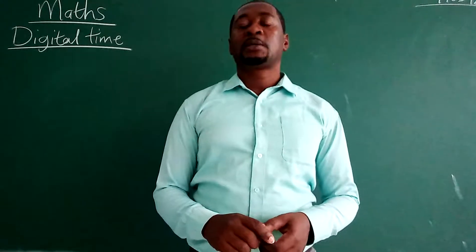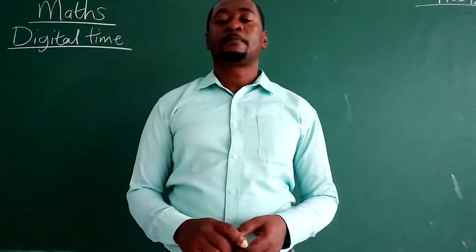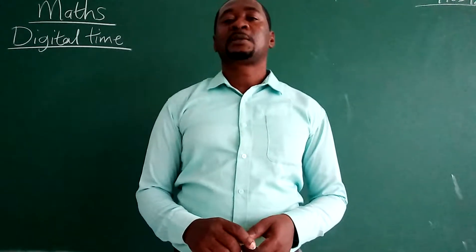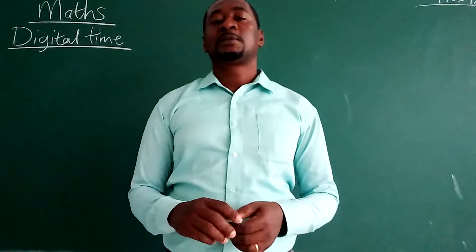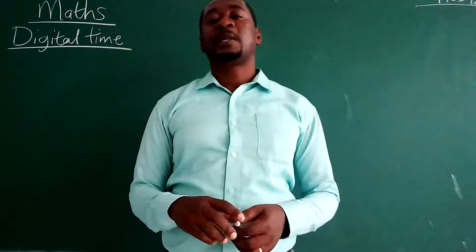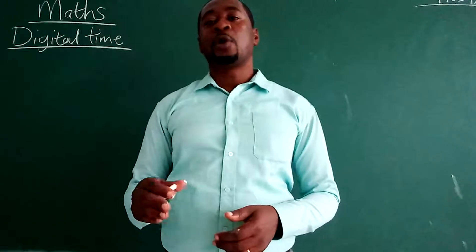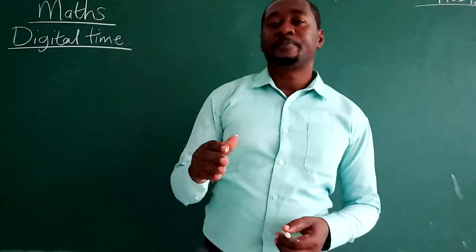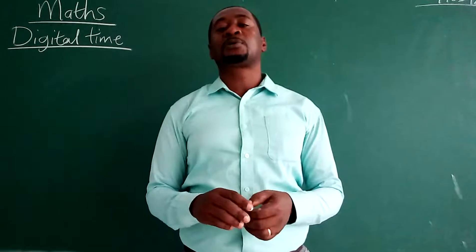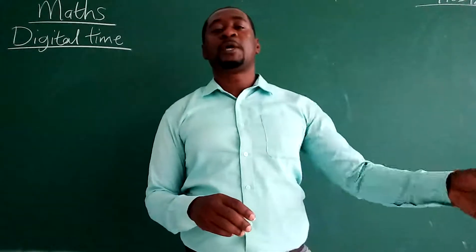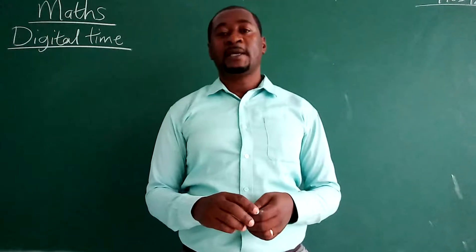Last week we did something on reflection. We said that if you are to reflect a certain coordinate about the X-axis, then the X line will be your main line, and the shape will come down to the other side. Or if it is on that side and you are to reflect it about the Y-axis, then the Y line will be your main line and you send the shape to the other side of the line.